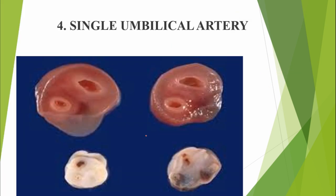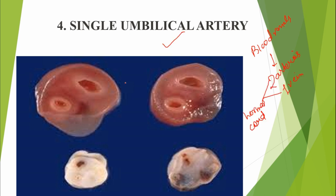The next abnormality is single umbilical artery. In a normal umbilical cord there are two arteries and one vein. In single umbilical artery, there are no two arteries — only one artery is present.